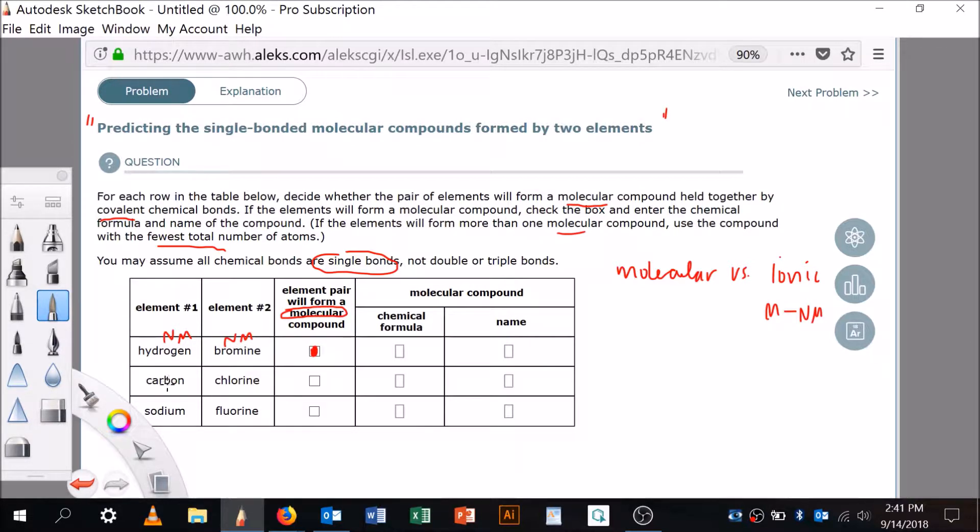All right, let's keep going down. Is carbon a metal? No. It's a non-metal. Is chlorine a metal? No. It's a non-metal. So yes, they will make a molecular compound.